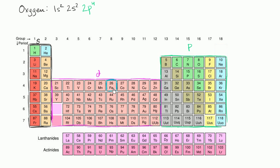You might be tempted when doing the electron configuration for iron — after filling up to 4s2 — to go 4d1, 4d2, 4d3, and so forth. But the D subshell actually backfills into the third shell. The thing to remember is that when you're thinking about which D subshell you're filling, you take the period minus 1. Iron is in the fourth period, so its highest energy electron isn't going to be in the 4d subshell — it's going to be in the 3d subshell.